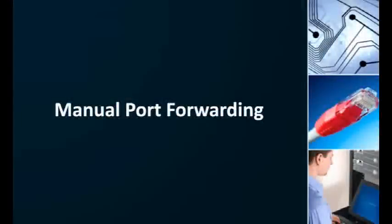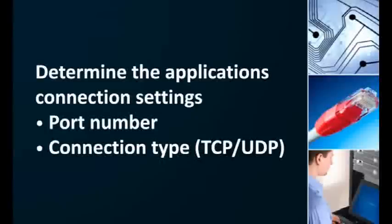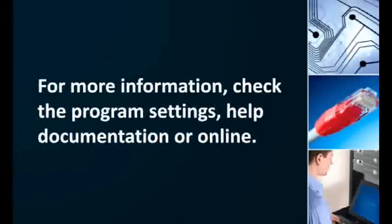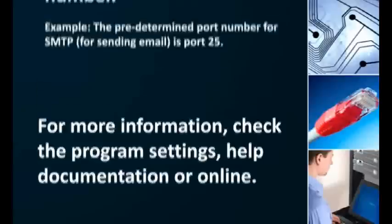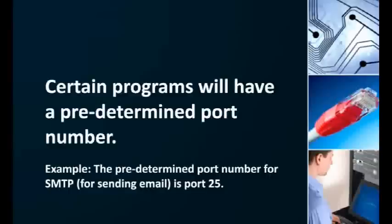There are times though when UPnP either isn't available on the router or isn't enabled for security purposes, and manual port forwarding becomes necessary. To manually forward ports, first you need to determine which port the application uses and with which connection type — either TCP or UDP. You can usually find this information in the program settings, in the program's help documentation, or online. Certain types of programs will use a specific port reserved for that type of application, such as HTTP for web traffic on port 80, or SMTP for sending email on port 25.